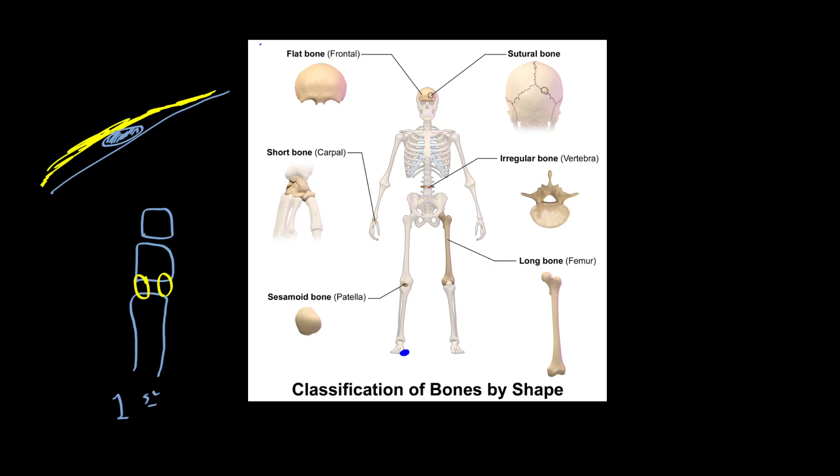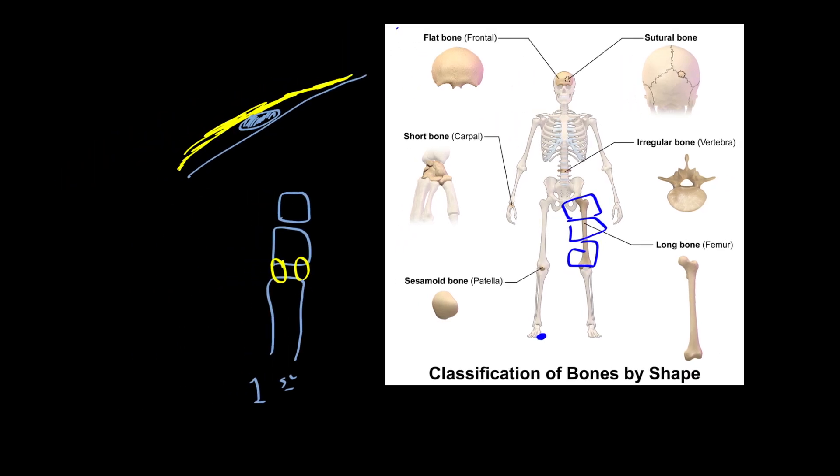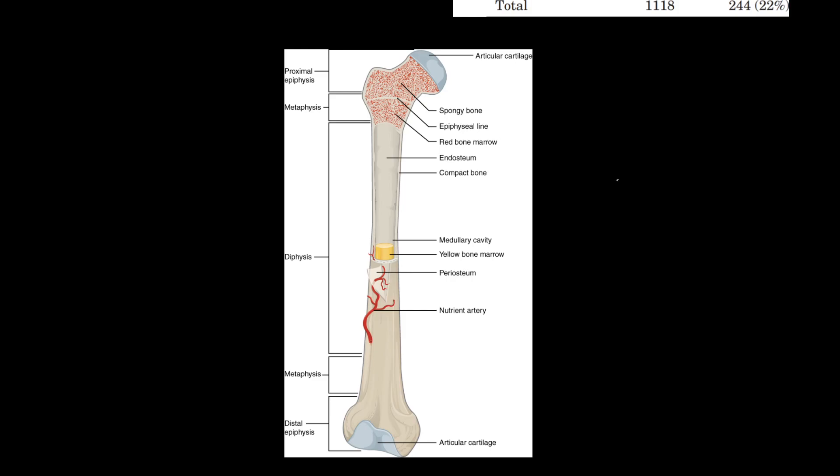We can also think about, within a bone, what are the different areas of the bone and what are they doing. So here's an example of the femur. We've got the femoral head up here. Then down here, we're looking at the knee. There's a few different areas we can think about with the bone. We can think about the epiphysis right here. That's basically the ends.